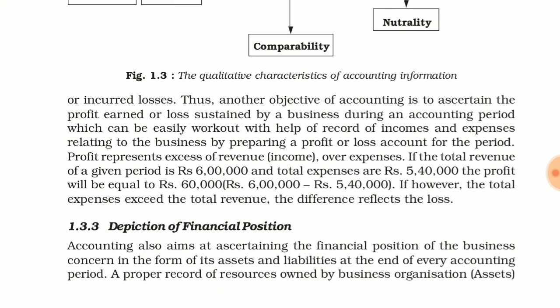Another objective of accounting is to ascertain the profit earned and loss sustained during an accounting period, which can be easily worked out with the help of records of income and expenses relating to the business by preparing a profit and loss account for the period. If you make a profit and loss account for that period, then you will easily know whether in that period you had a profit or a loss.